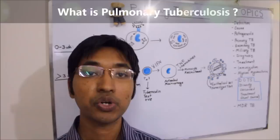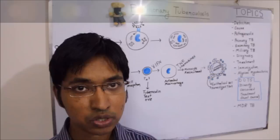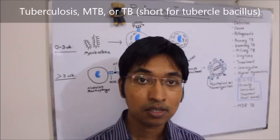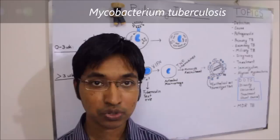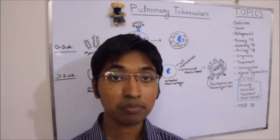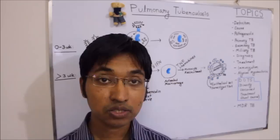First question: what is pulmonary tuberculosis? To understand pulmonary tuberculosis, first we must know what tuberculosis is. Tuberculosis, often referred to as TB in short, is an infectious bacterial disease caused by different strains of bacteria named mycobacterium tuberculosis. It can occur in different tissues and organs, but the most common site for this bacterial infection is the lungs,